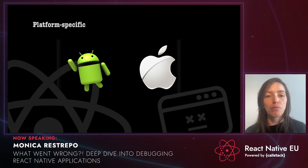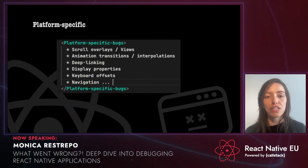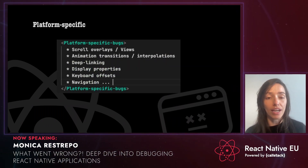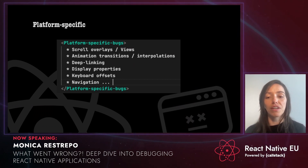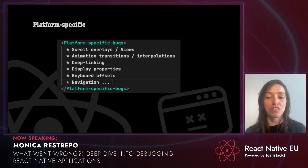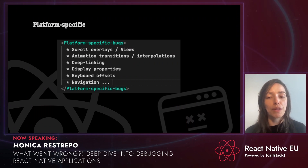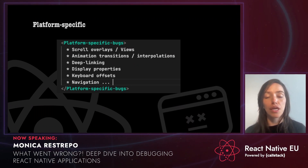Some of the most common things to cause us problems in our React Native applications related to platforms are scroll views, overlays, animations, transitions and interpolations, deep linking, display properties, keyboard offset, and so on.